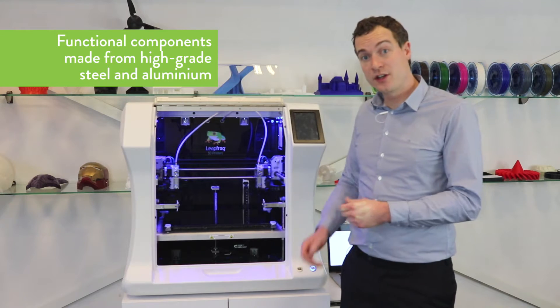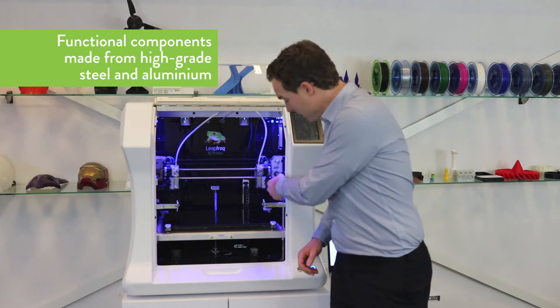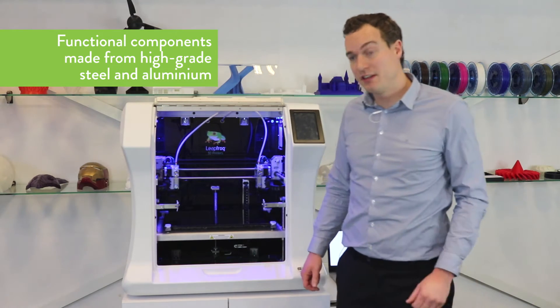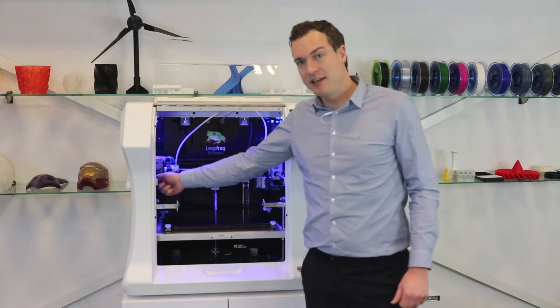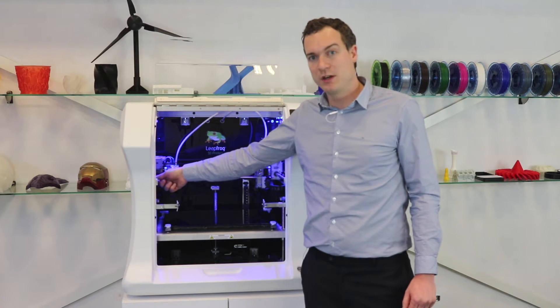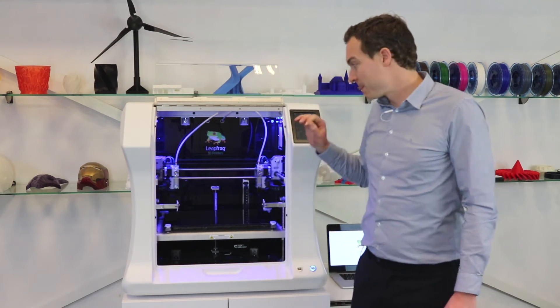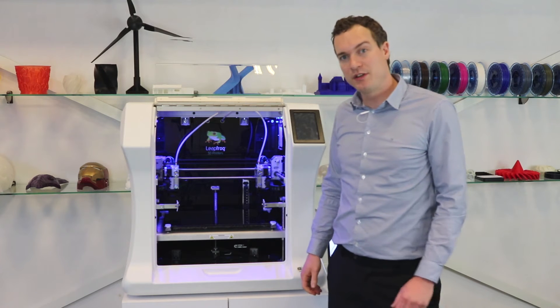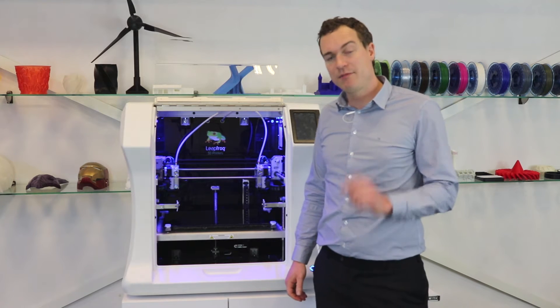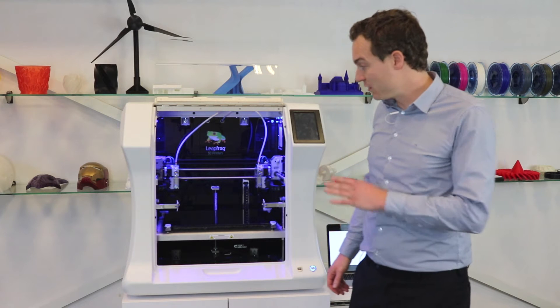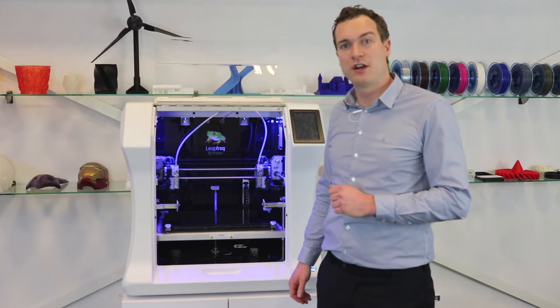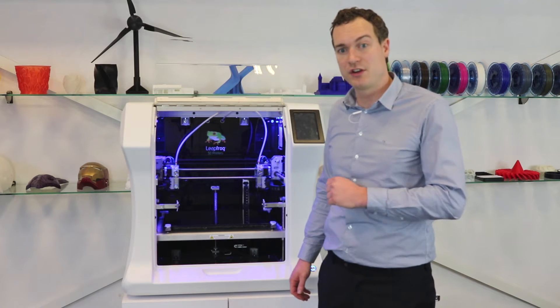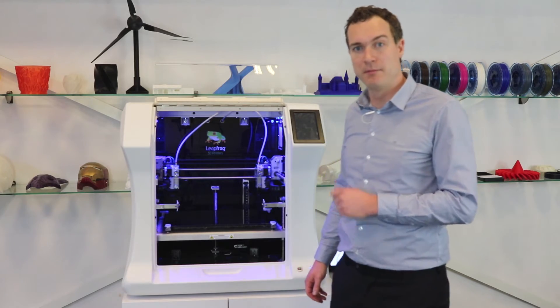Note that all the functional components of this machine are made out of steel, where our competition typically uses plastic. The guiding rods are very strong, made of 12mm solid steel. This makes sure that your printer will never break down. At LeapFrog we're even so convinced of the durability of the Bolt that we offer up to 3 years warranty, making sure you have a hassle-free printing experience for many years to come.